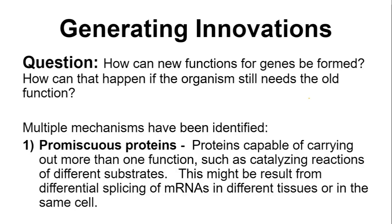Promiscuous proteins are proteins capable of carrying out more than one function. Not every single protein has a single function — some have dual functions. You can think of them as sloppy enzymes: they mostly perform one task, but biochemistry is not always as clean as we make it out to be. They can also catalyze other reactions. There's also the fact that you can splice up a gene in different ways, with different mutations causing the protein to be assembled differently, perhaps in different tissues, allowing the same genetic sequence to be used for multiple functions in multiple parts of the body.